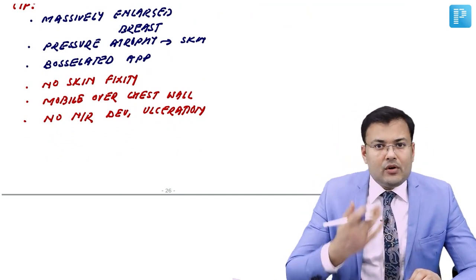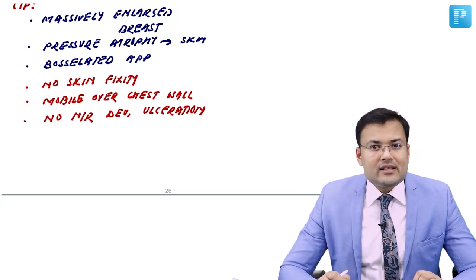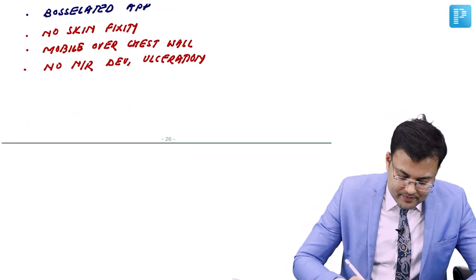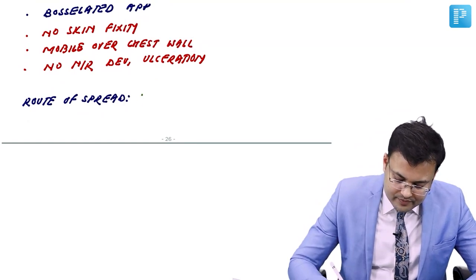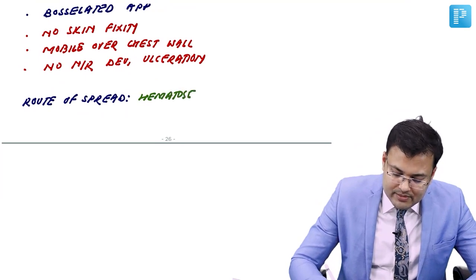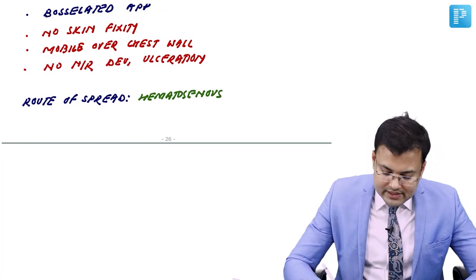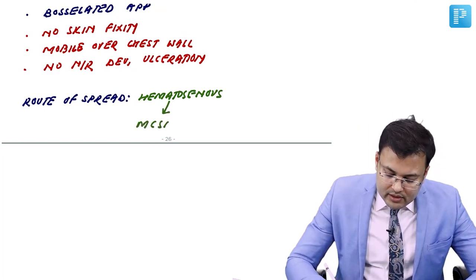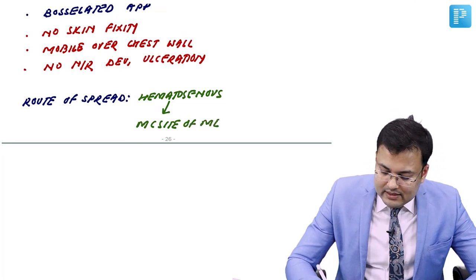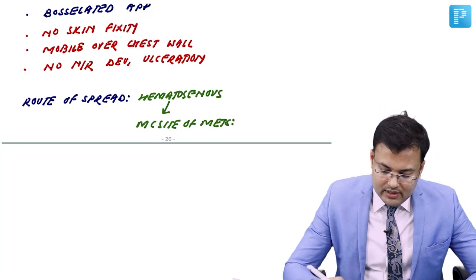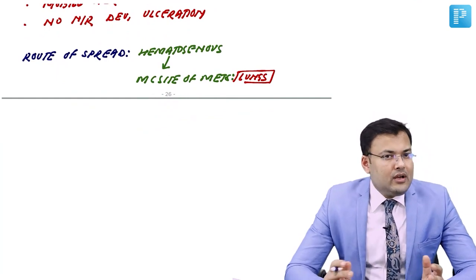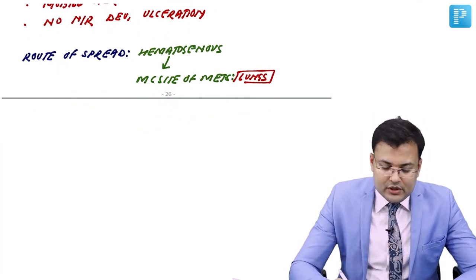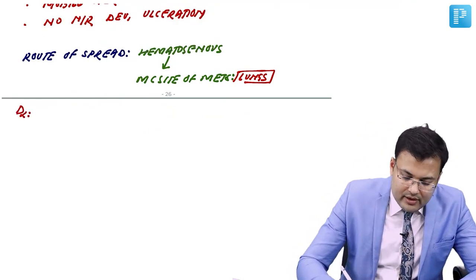Because of hematogenous spread, the most common site of metastasis is the lungs. The route of spread is exclusively hematogenous — lymphatic spread is not seen. The investigation of choice for diagnosis is biopsy, as in other sarcomas.